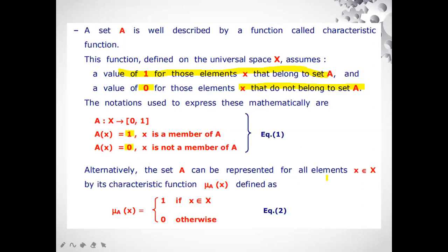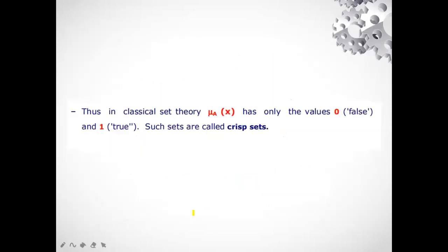Crisp means that it has clear boundaries and what are the two boundaries of crisp? That is zero and one. So nothing in between, it is clear cut either zero or one. So alternatively, the set A can be represented for all elements where X belongs to universal set X by its characteristic function μA(x) defined as this we have already done. That is, it will be one if X belongs to universal set X and will be zero in otherwise condition. That is, if X does not belongs to universal set X.